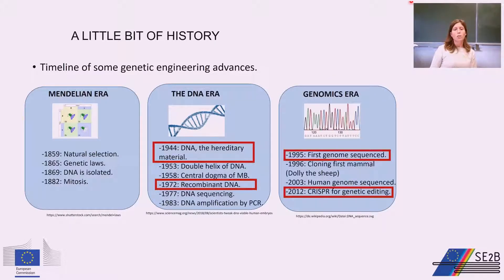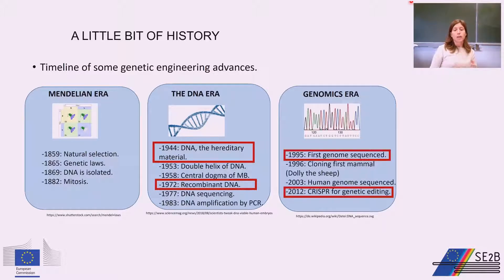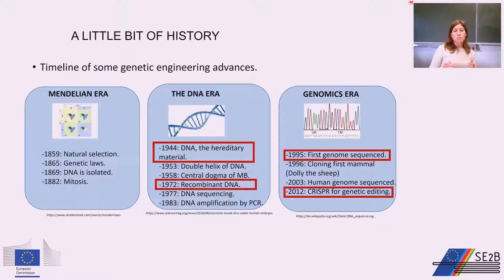Now let's take a look back in history at genetic engineering advances. In the 1800s, natural selection and genetic laws were discovered. In the 1900s, DNA was identified as the hereditary material. In 1972, recombinant DNA was produced for the first time. In 1995, the first genome was sequenced. In recent years, new genetic editing tools have been developed, such as CRISPR-Cas.